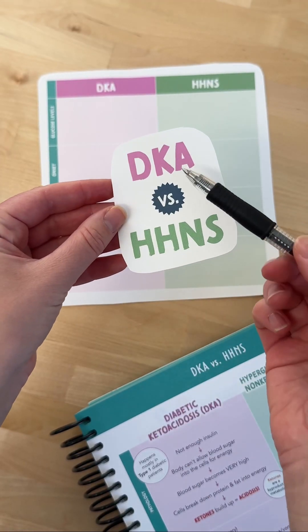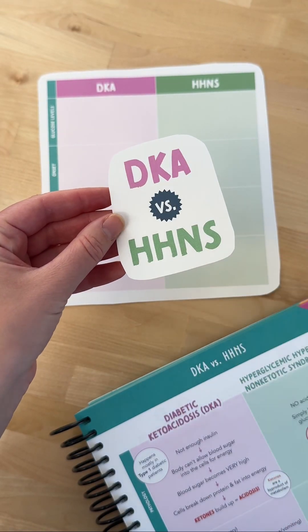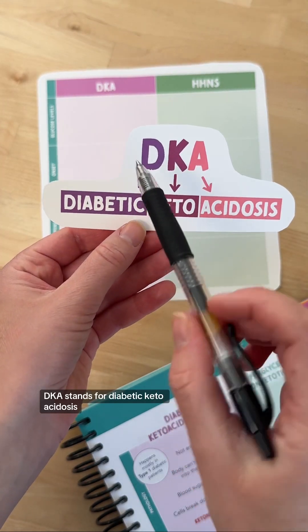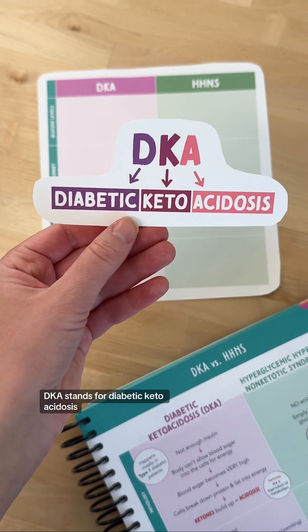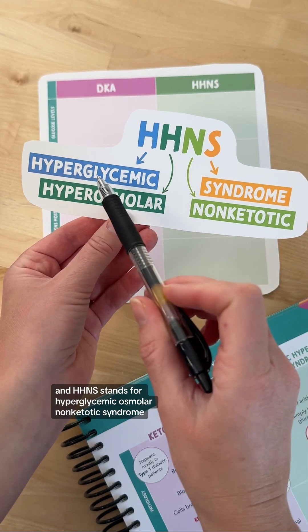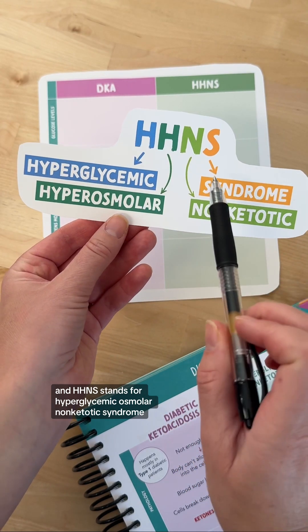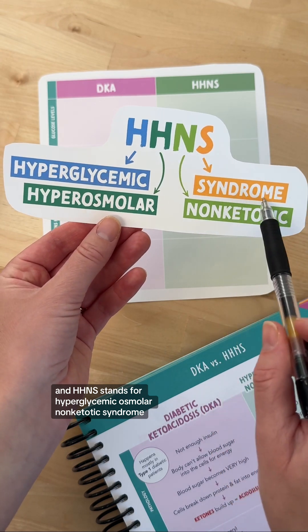Let's talk about the difference between DKA versus HHNS. DKA stands for diabetic ketoacidosis, and HHNS stands for hyperglycemic hyperosmolar non-ketotic syndrome.